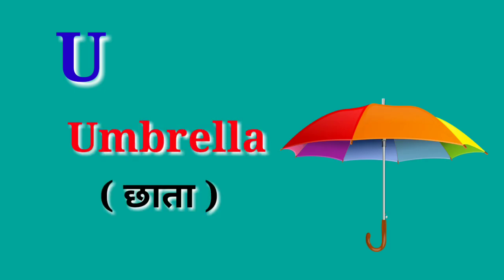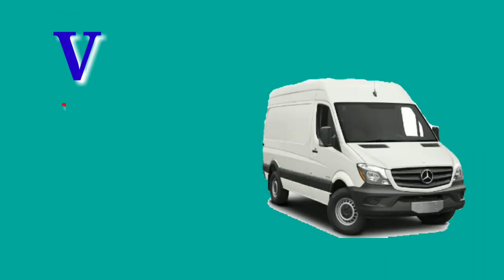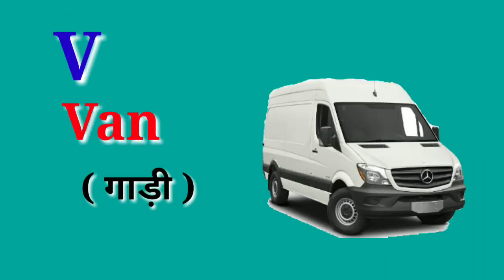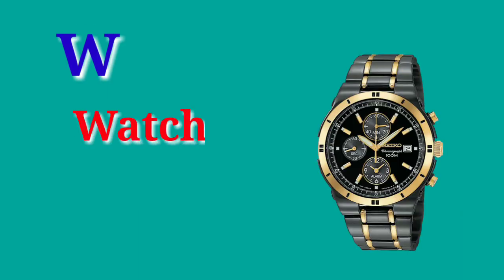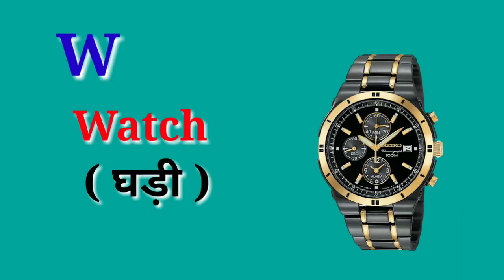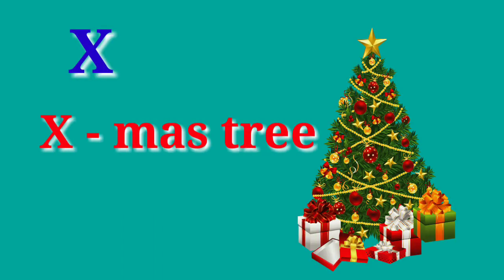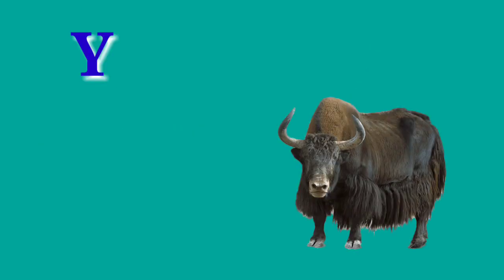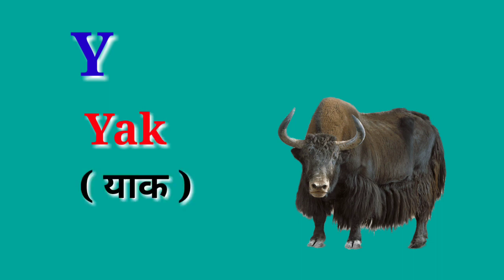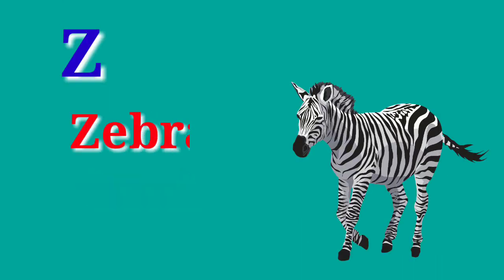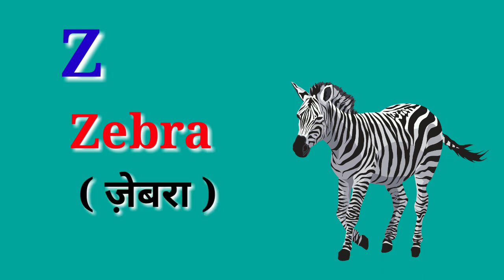U for umbrella, umbrella means chata. V for van, van means gari. W for watch, watch means gari. X for xmas tree. Y for yak, yak means yak. Z for zebra, zebra means zebra.